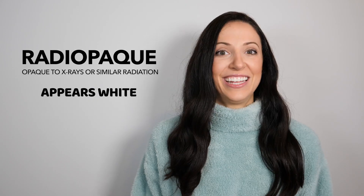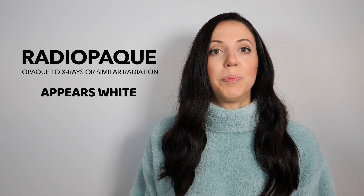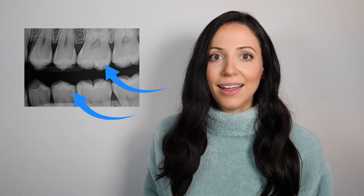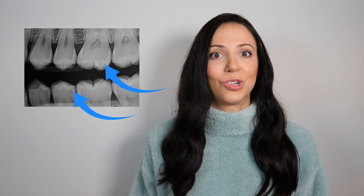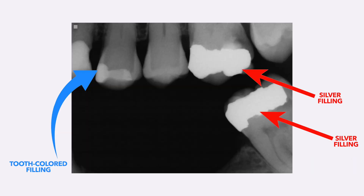Radiopaque means light or white in regards to the black and white contrast scale of an x-ray. Some structures will appear radiopaque, such as the enamel of a tooth — again, a hundred percent normal, that's what it should look like. When you see something even more radiopaque than the enamel on the crown of a tooth, it's usually an existing filling already present in your mouth. Sometimes when it's super radiopaque, it's a silver filling. Those were examples of things that are normally radiolucent or radiopaque in your mouth.